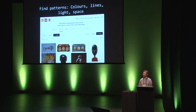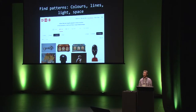We can also use these tools to find patterns that would be harder to spot with traditional cataloguing. The Barnes Foundation used a product called Art PI to find patterns in the colours, lines, light and shape of their collection. Here for example are all of the works that have horizontal lines in them.